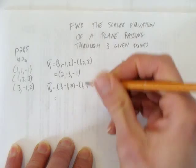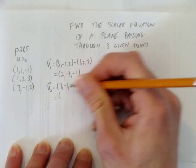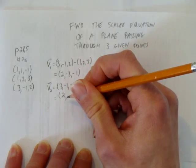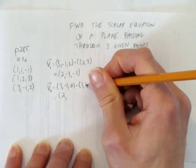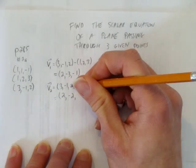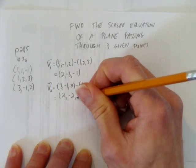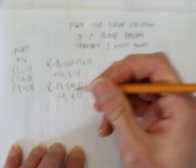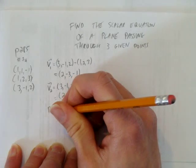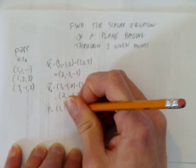When I do that, I get, well, 3 take away 1 is just 2. And -1 take away 1 is -2. And 2 take away a negative is a positive. So, 2 plus 1 is 3. So, I've got my two direction vectors. And I'm going to use the point later, (1, 1, -1).